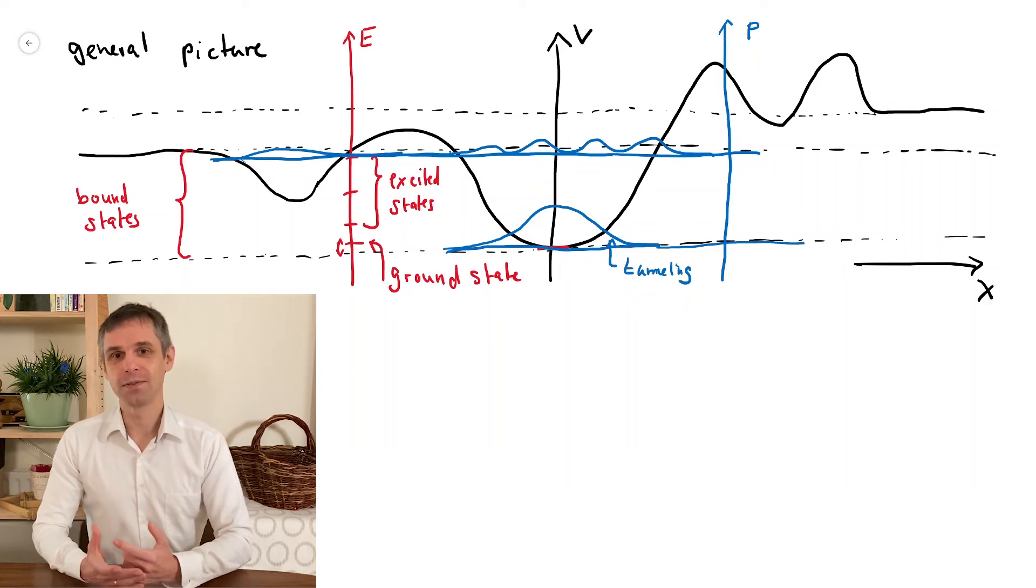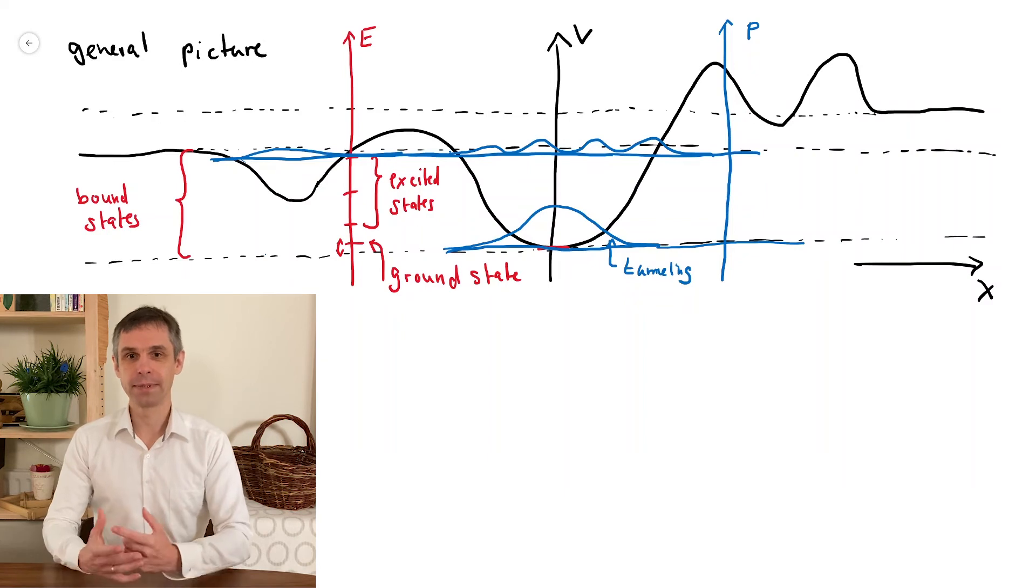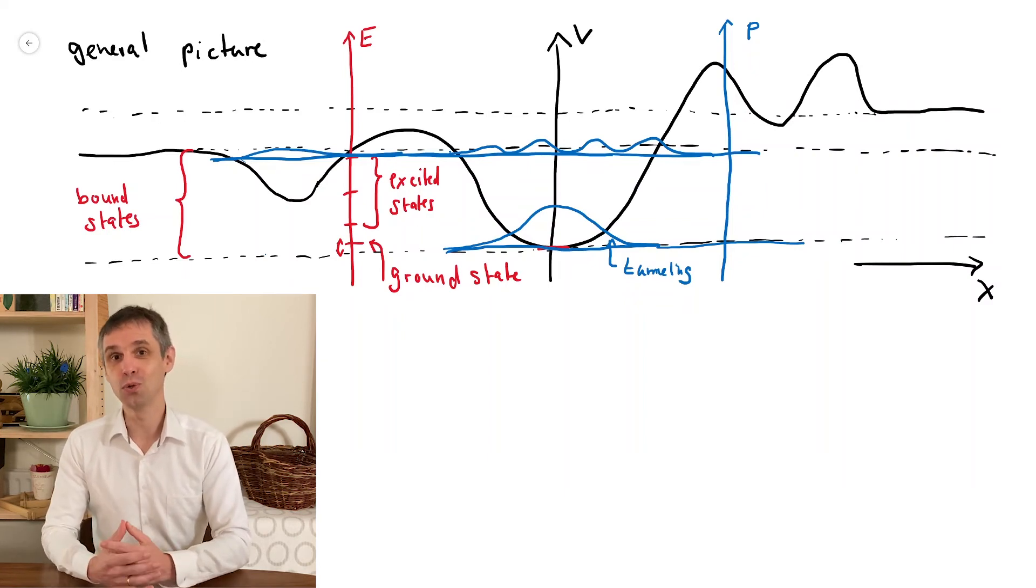I also highlight the fact that in the excited states, the probability density generally oscillates, so you find nodes.